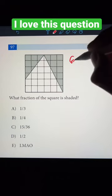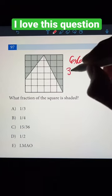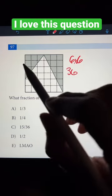What fraction of the square is shaded? Since this is a 6x6 block, that means there are 36 total squares in this entire figure. So now we have to find the area of both of these triangles.